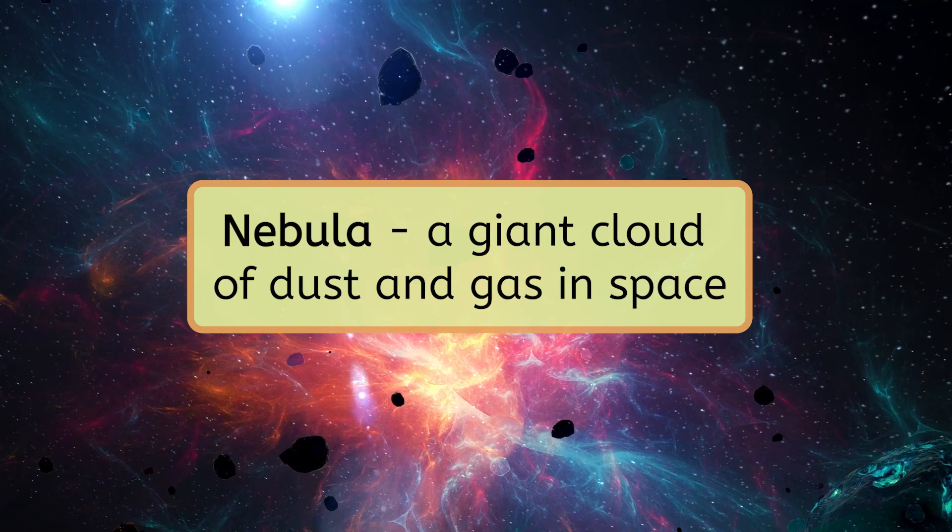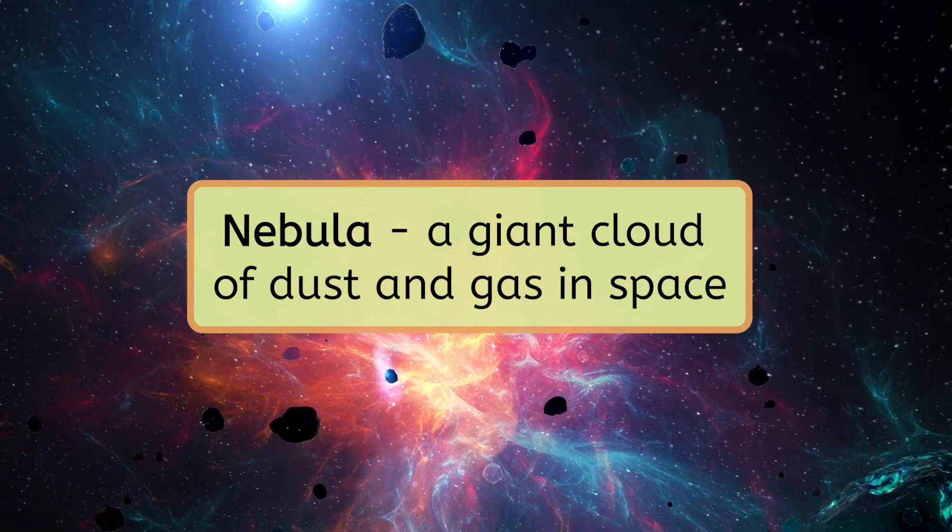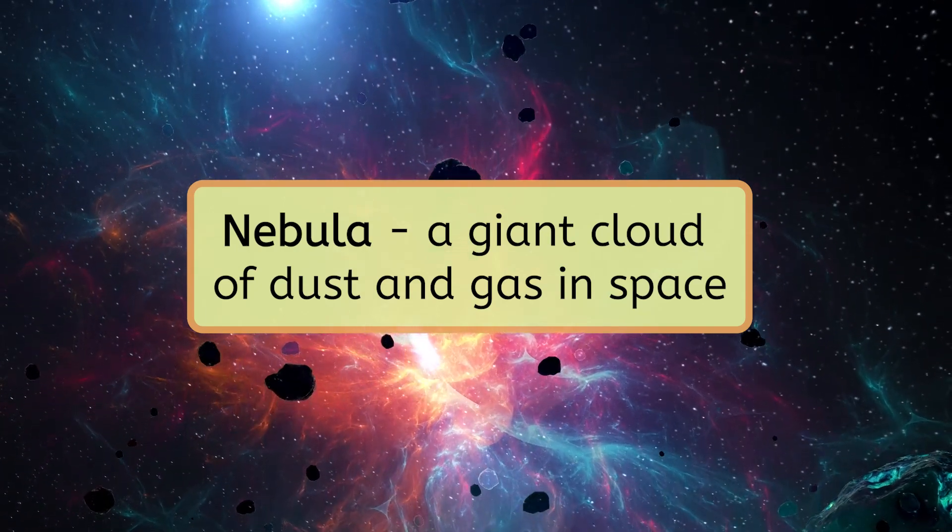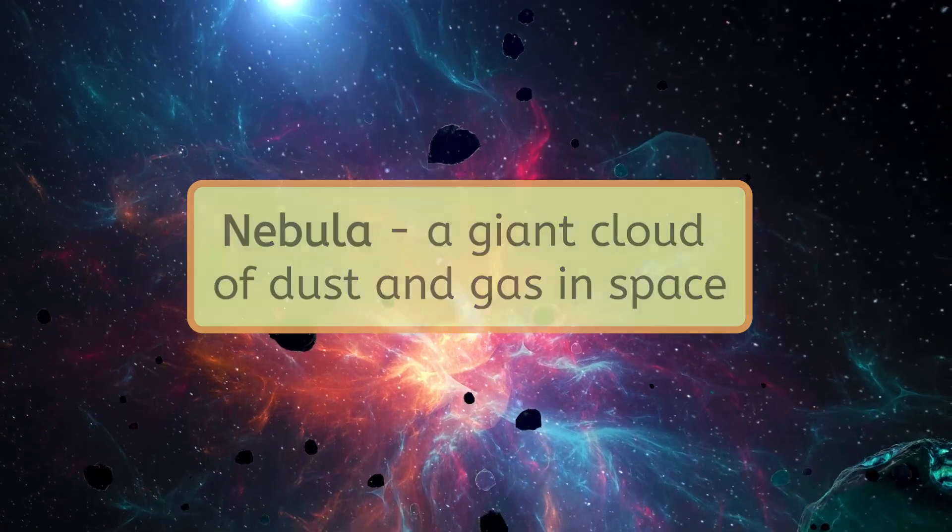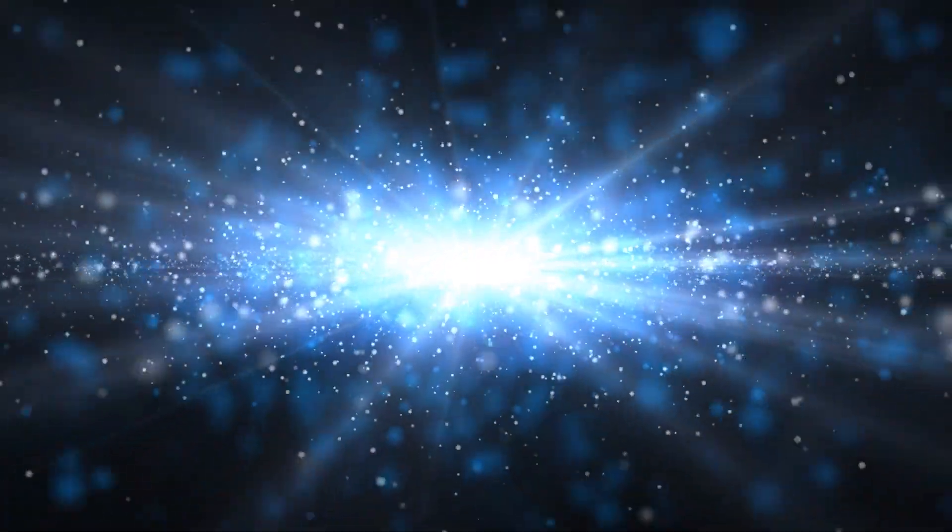Stars begin in a giant cloud of gas and dust known as a nebula. This cloud is mostly made up of hydrogen and helium. Over time, the particles of these gases begin to pull together due to gravity. As more and more particles clump together, the gravitational pull becomes stronger, which keeps bringing in even more material. Eventually, the clump gets big enough that the materials collapse from the immense gravitational pull, forming a protostar.